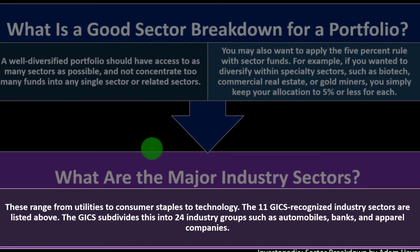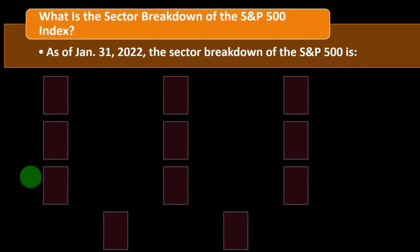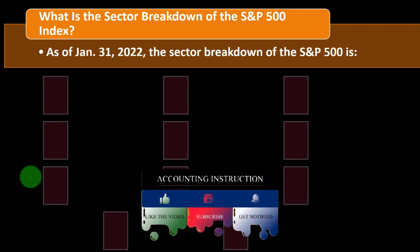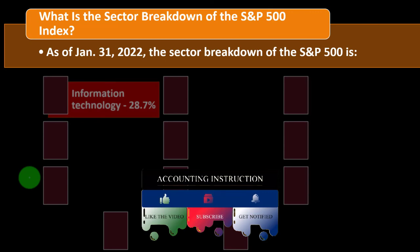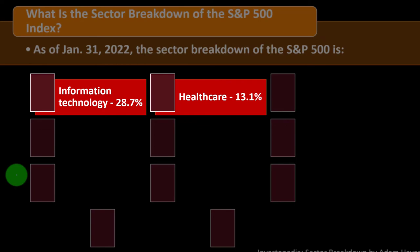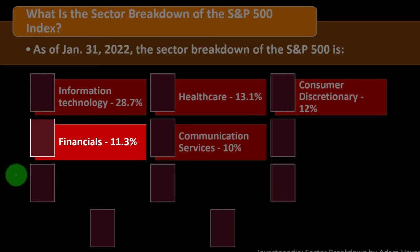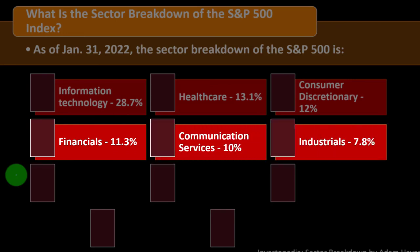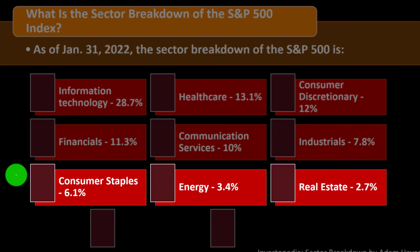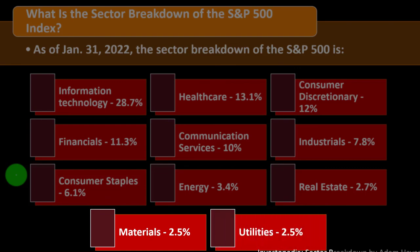The major industry sectors range from utilities to consumer staples to technology. The 11 GICS recognized industry sectors, which subdivide into 24 industry groups such as automobiles, banks, and apparel companies. As of June 2022, the S&P 500 sector breakdown was: Information Technology 28.7%, Healthcare 13.1%, Consumer Discretionary 12.1%, Financials 11.3%, Communication Services 10%, Industrials 7.8%, Consumer Staples 6.1%, Energy 3.4%, Real Estate 2.7%, Materials 2.5%, and Utilities 2.5%.